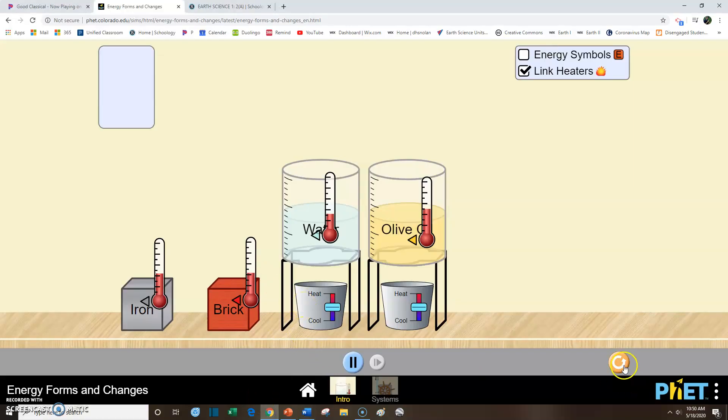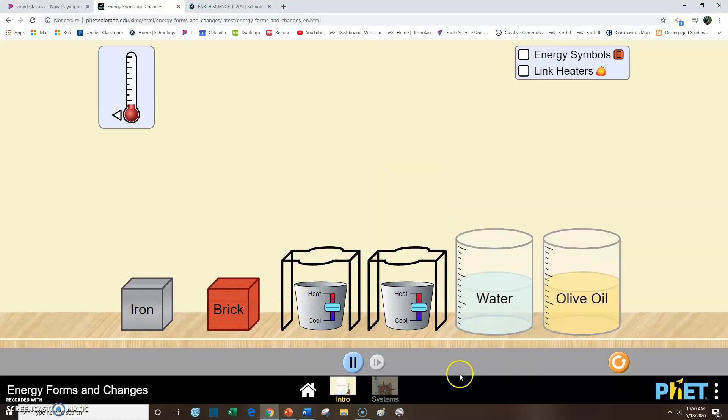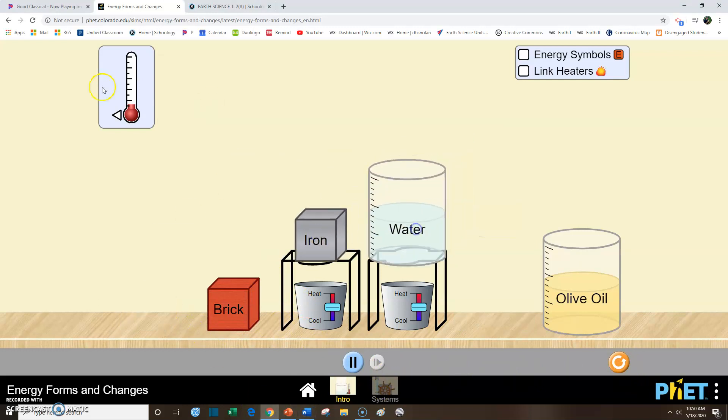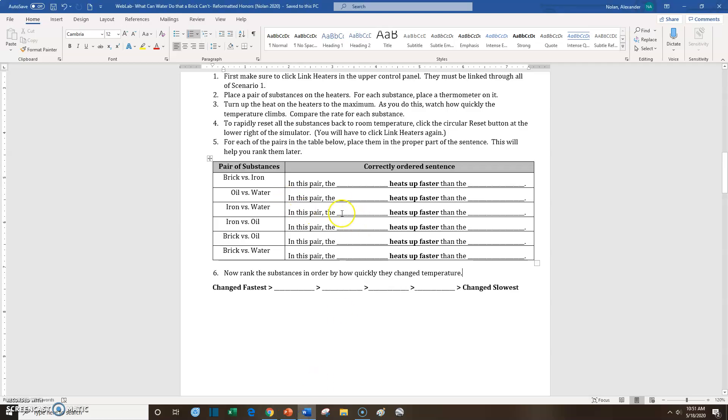Let's do iron versus water. So here's where I'm going to restart everything. So it goes back to the original temperature. What did we say? Iron versus water. So we're going to do iron, water, put the thermometers on, link the heaters, heat everything up. That's pretty interesting. It looks like the iron is heating up way faster. If you look at this thermometer on the left, this one has really cruised. The water is heating up pretty slowly. So in this case, the iron heats up faster than the water.